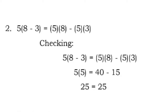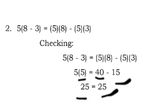Number 2: 5 times the quantity of 8 minus 3 equals 5 times 8 minus 5 times 3. Checking: 8 minus 3 is 5, and 5 times 5 is 25. Then 5 times 8 is 40, and 5 times 3 is 15, so 40 minus 15 is also 25. They are equal.